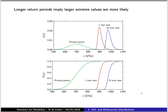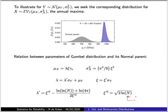If you change the interval within which you are looking for the maximum, the Gumbel distribution will change. In the previous example, looking at the maximum in every given year produced one distribution. If instead you look for the maximum over a 50-year period, a different distribution results. However, if you know the annual maximum distribution, you can easily derive the 50-year distribution by a process of scaling involving a change of variable.